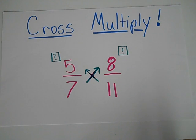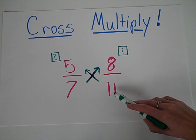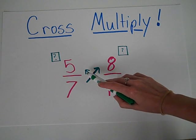Cross multiply. When you cross multiply, you start at the bottom number and you go diagonal, as you can see my arrows go.